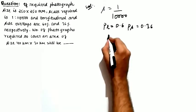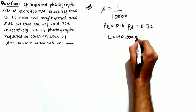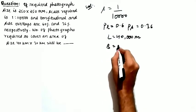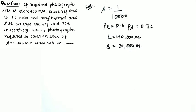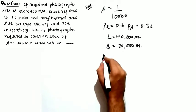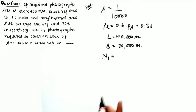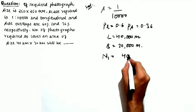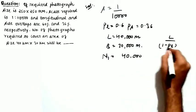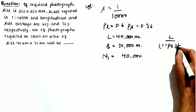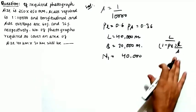The area to be covered has a length of 40,000 meters and a width of 30,000 meters. This is Case 2 of number of photographs since the length and width of the ground are given rather than the area. You can calculate photographs in the length direction as N1 = L / ((1 - PL) × l / S), where L is the ground length and l is the photograph length.